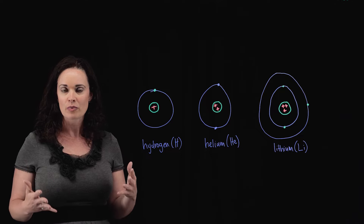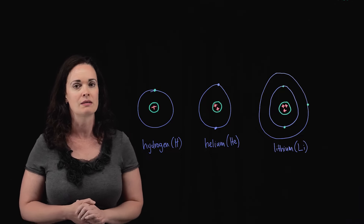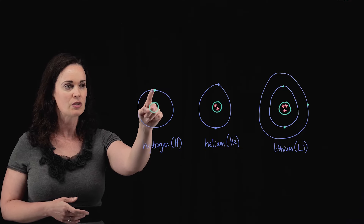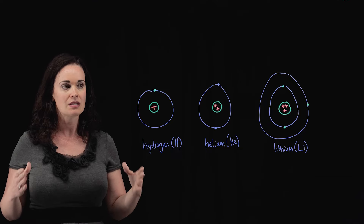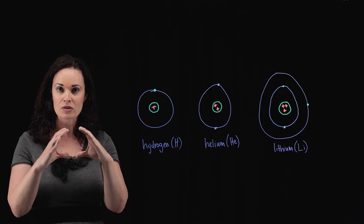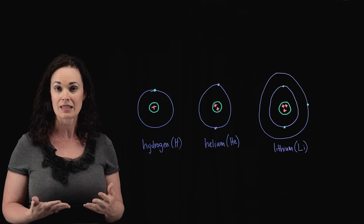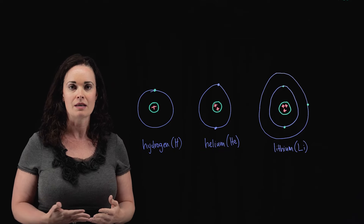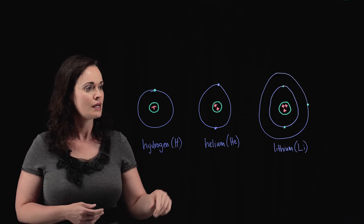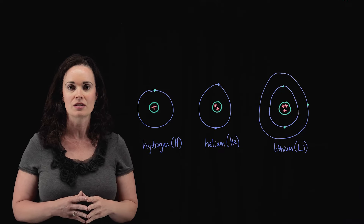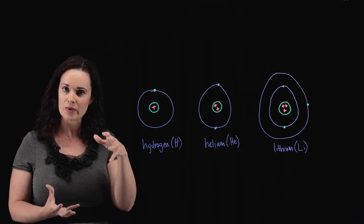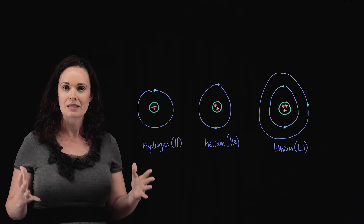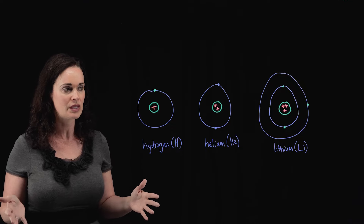In the previous video we talked about the fact that the number of protons and number of electrons in a particular atom is equal. Here's my Bohr model of hydrogen — it has a single proton and a single electron. Electrons fill orbital shells closest to the nucleus first, as we see with hydrogen. Here I've drawn a Bohr model of helium, which has an atomic number of two, so two protons and two electrons. Those two electrons fill the shell closest to the nucleus first.